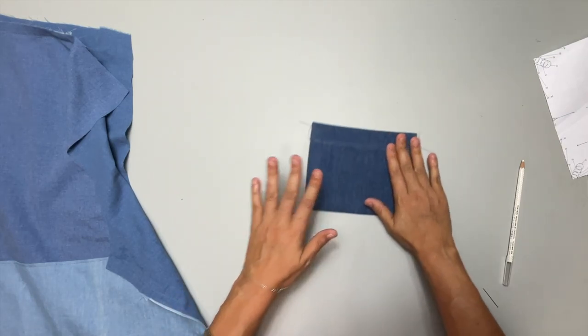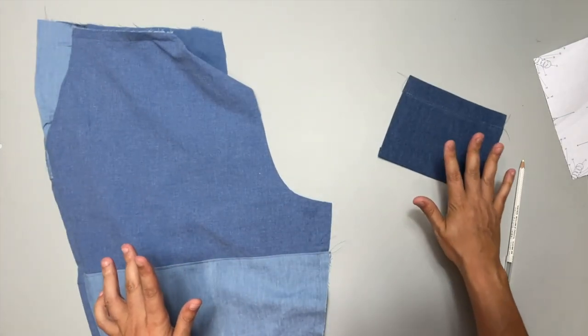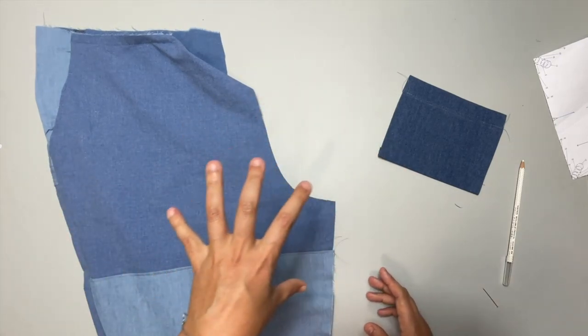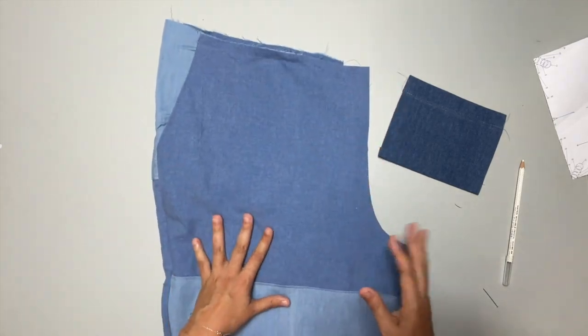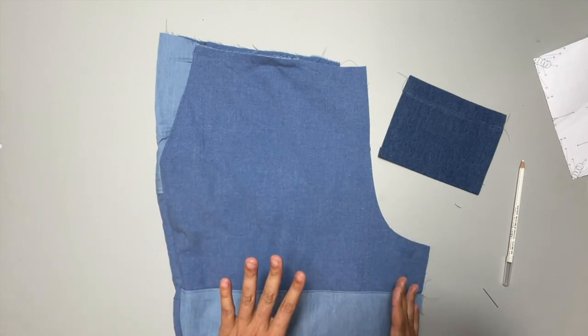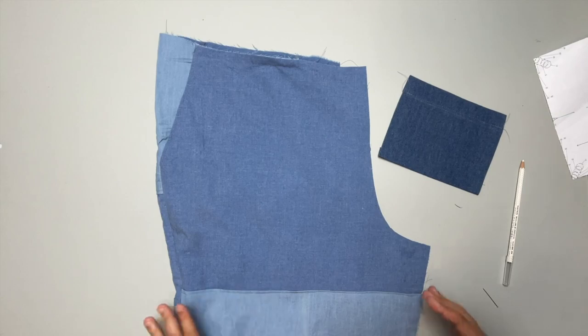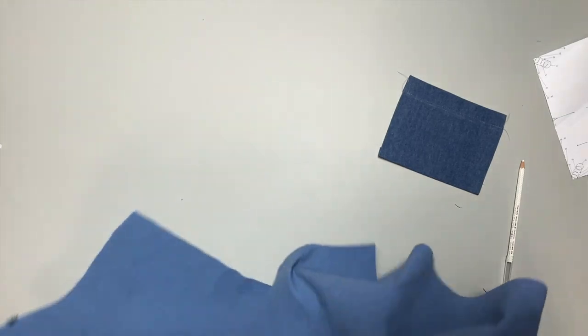Now we're going to attach this to the seam allowance of the wearer's right leg. So when you're looking at it, it's opposite. So when we're looking at it, it looks like the left. That means when we wear it, we wear it on the right. Okay, so that's going to be where this goes.